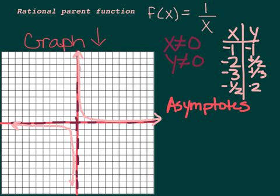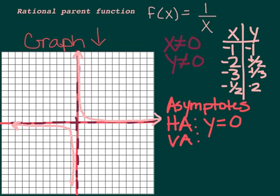The horizontal asymptote is at y equals 0, and the vertical asymptote is at x equals 0.